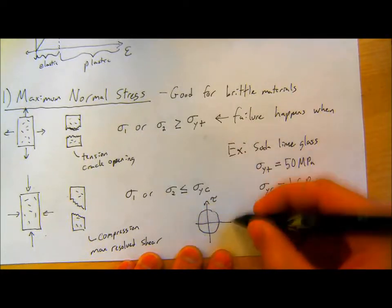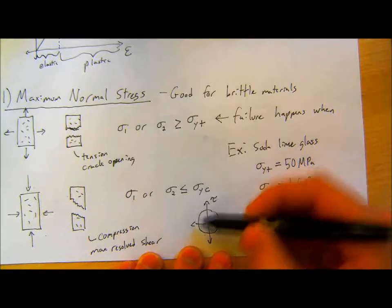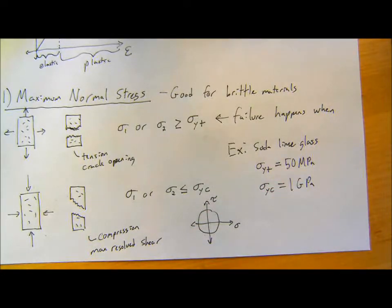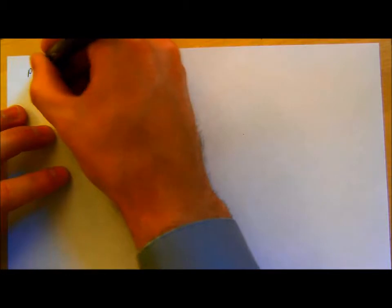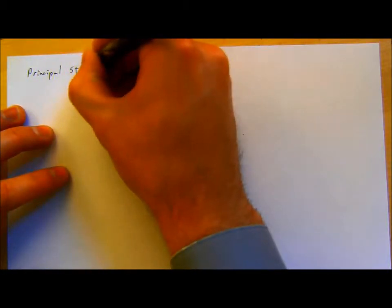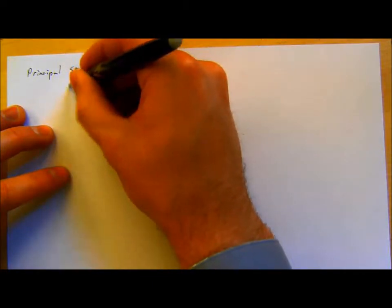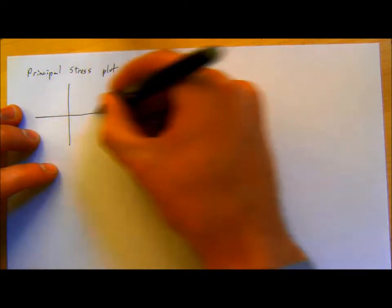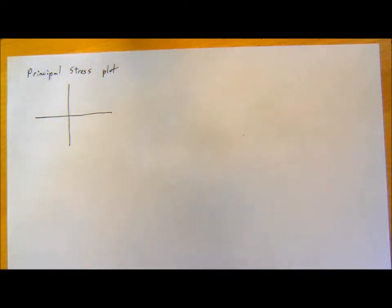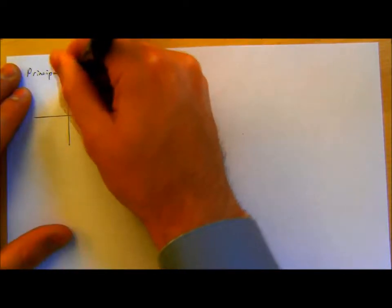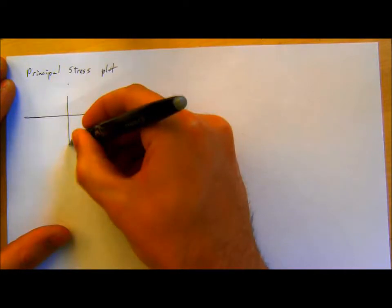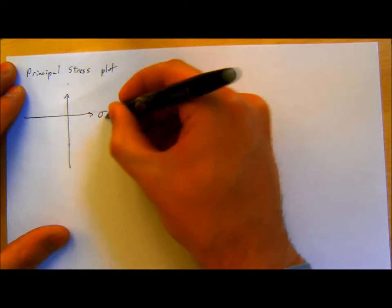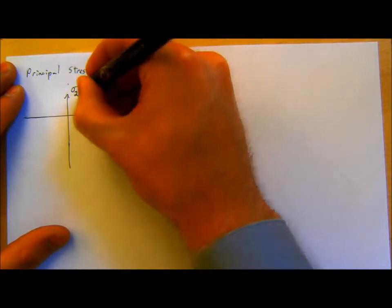To visualize this a little better, what we can do is plot a graph in terms of principal stresses — a principal stress plot. I'm going to make a plot in terms of our principal stresses σ1 and σ2. Our Mohr's circle was plotting some axial stress versus some shear stress; this is now slightly different. We can plot our failure surface now for the maximum normal stress criterion.